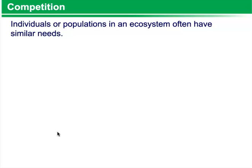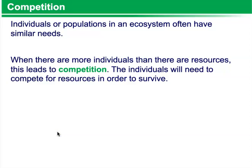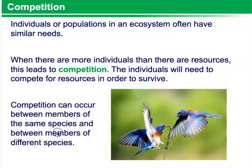Competition. Individuals or populations in an ecosystem have similar needs. When there are more individuals than there are resources, this leads to competition. The individuals will need to compete for resources in order to survive. Competition can occur between members of the same species and between members of different species. Here we see an eastern bluebird in competition with another eastern bluebird for some type of food resource.